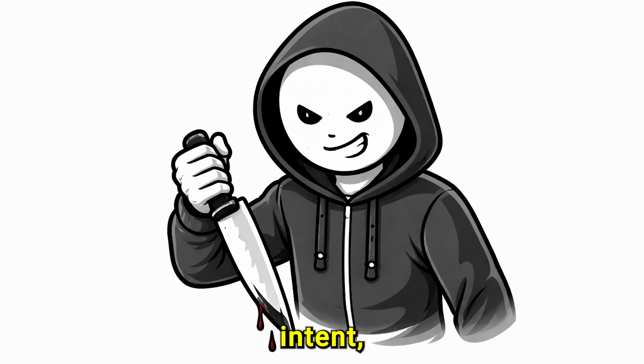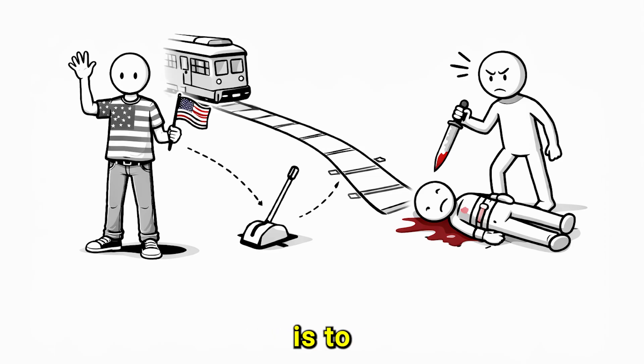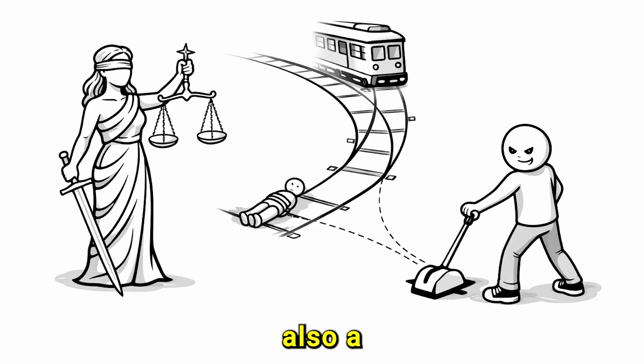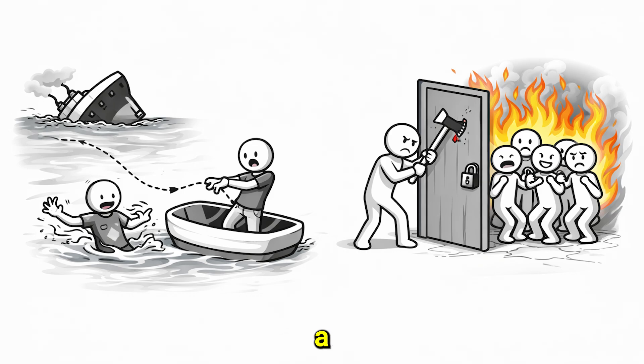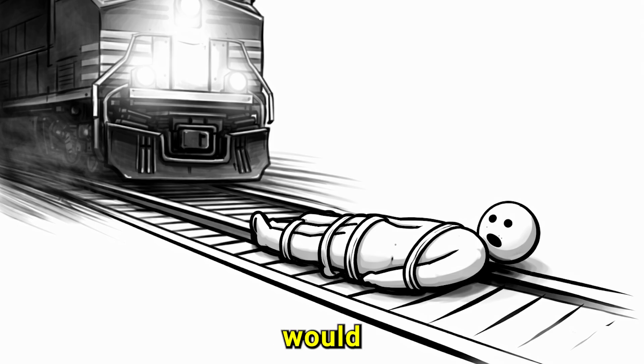Murder requires intent, meaning you must want someone dead. Here, your intent is to save five lives, not to kill one. There is also a legal idea called the doctrine of necessity, which allows a smaller harm if it prevents a much greater one. So the law would likely see the action as justified.